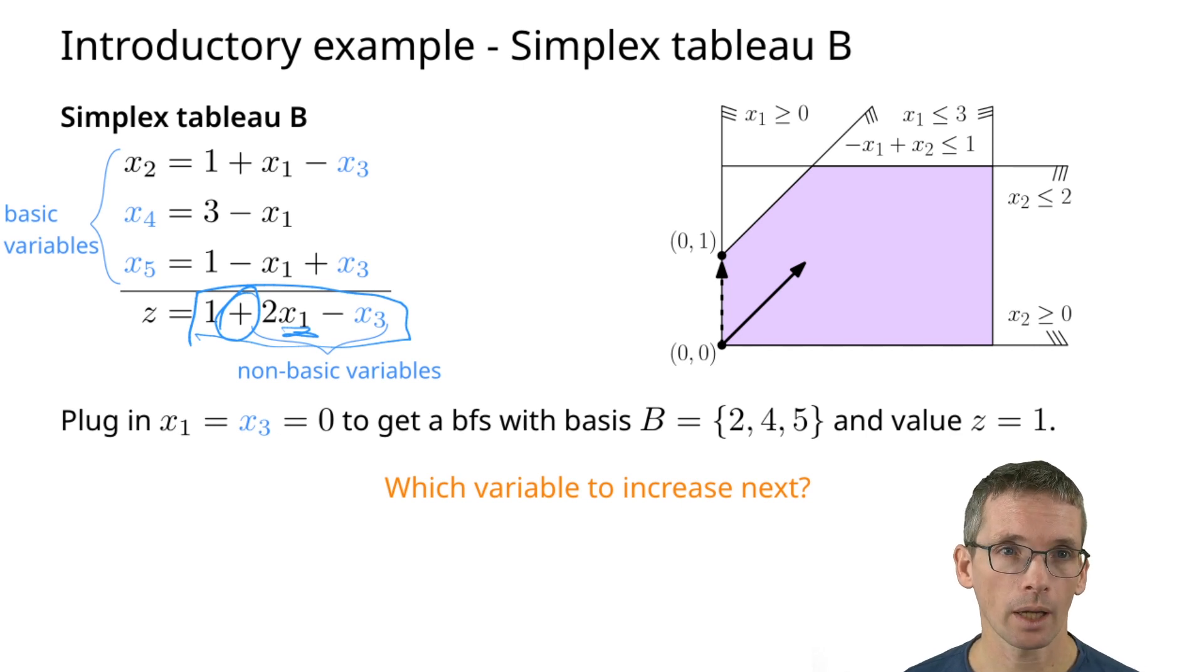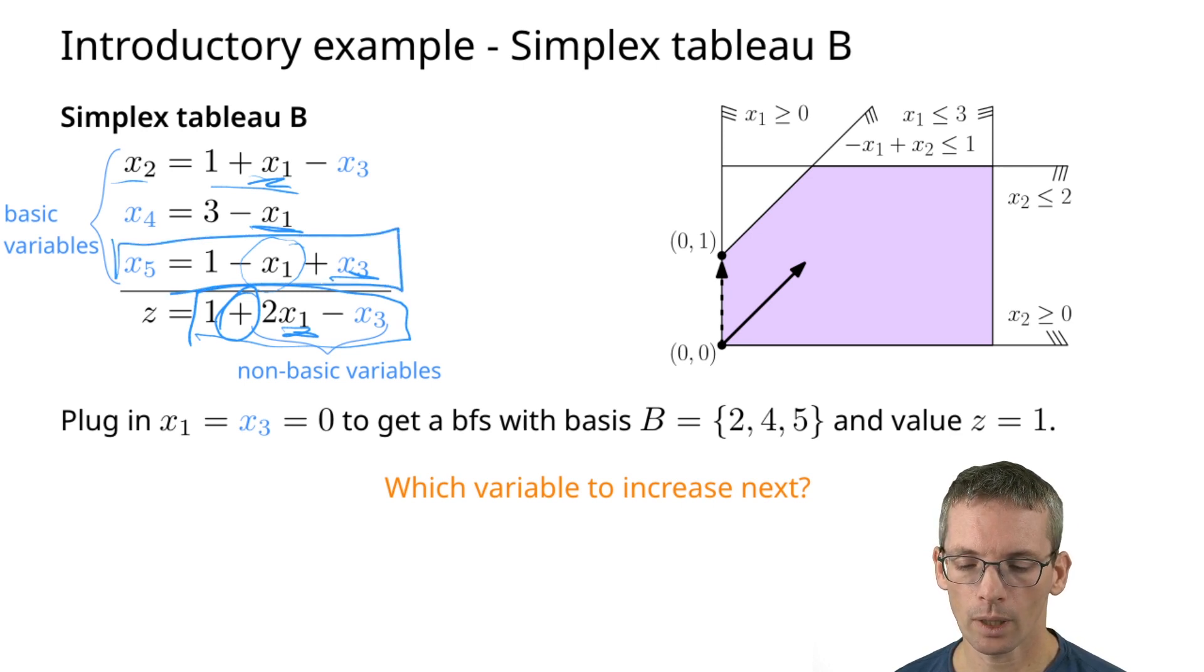Again, we have to decide which of those variables do I swap out. For that, we again look at which one constrains x1 most. x2 does not constrain x1 at all because x1 shows up positively here. Here x1 has to be smaller or equal 3. And here x1 has to be smaller or equal 1 because then I hit 0, assuming x3 is 0. So x5 constrains x1 most.